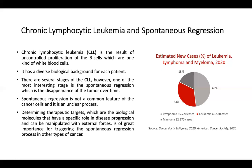Since spontaneous regression is not a common feature of cancer cells, it's an unclear process and needs to be addressed in order to make it possible to trigger this mechanism in other types of cancers. For this, we need to determine well-established therapeutic targets, which are the biological molecules that have a specific role in disease progression and can be manipulated with external forces. In this project, I investigated the mechanism behind this process to understand the cell's decision by comparing the spontaneous regression and the progressive tumor state.